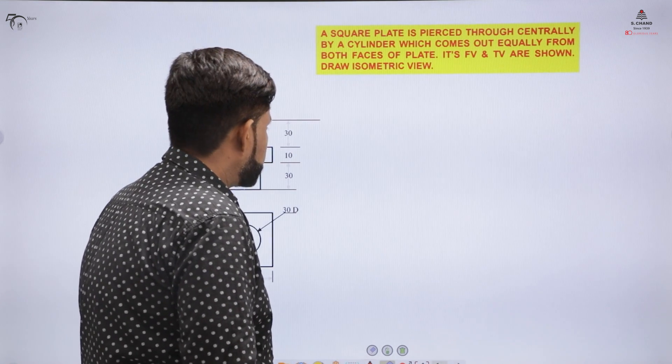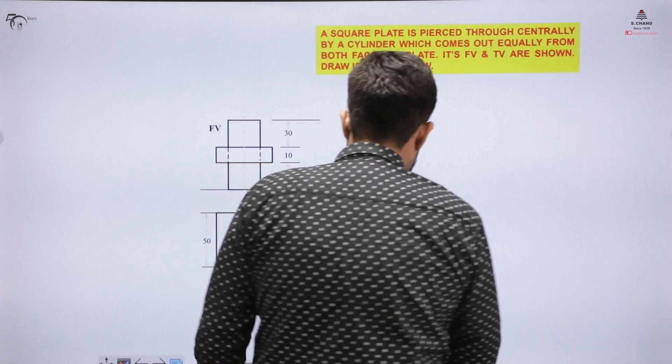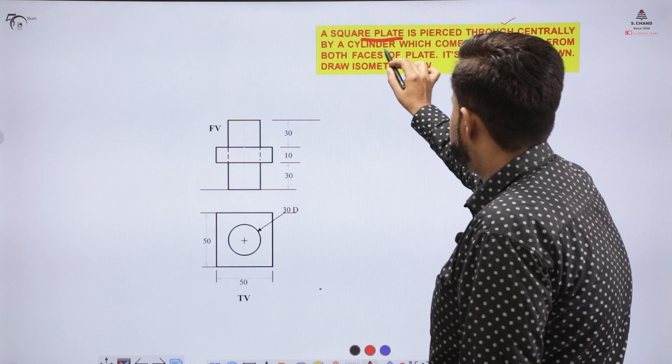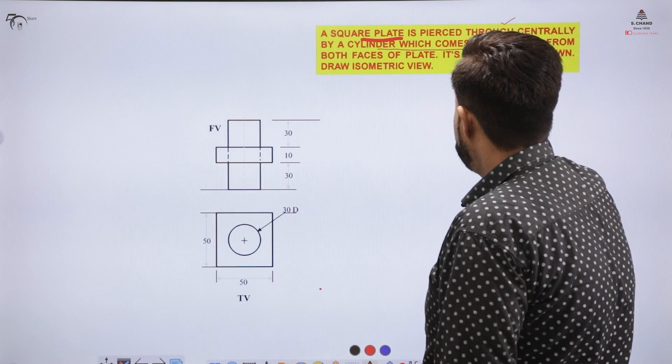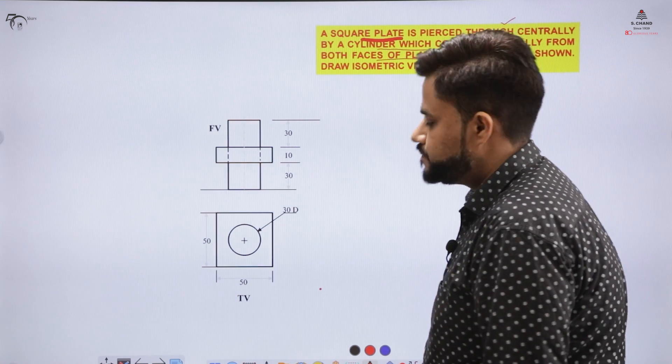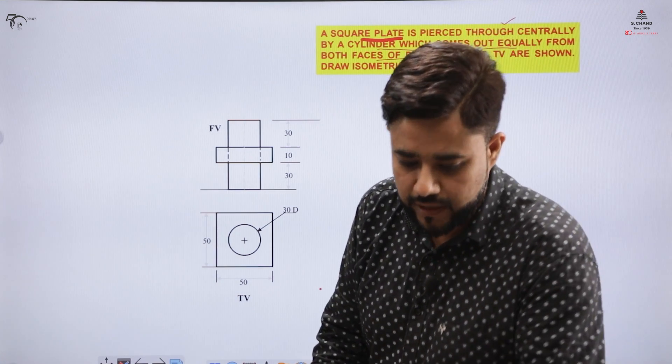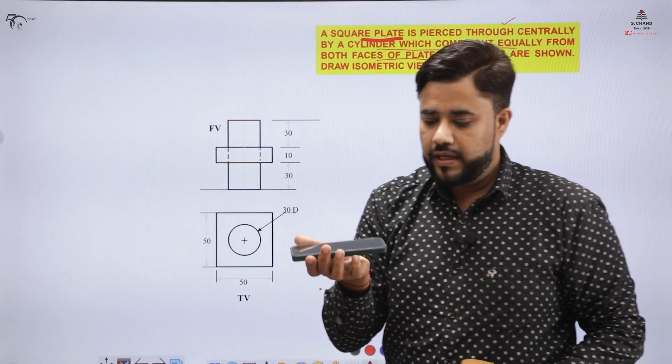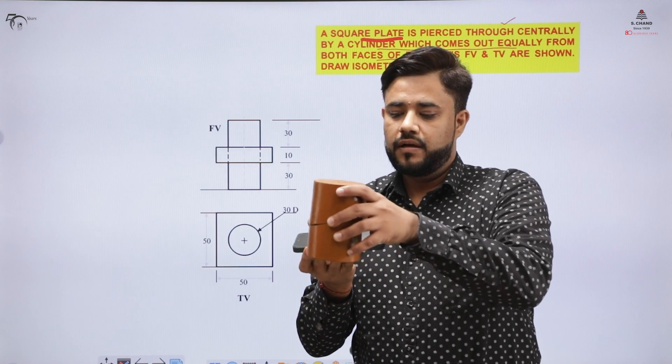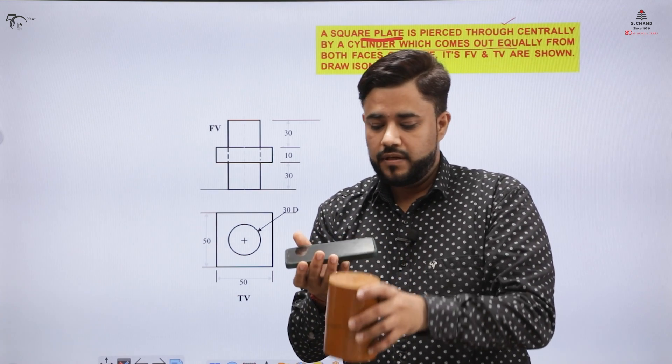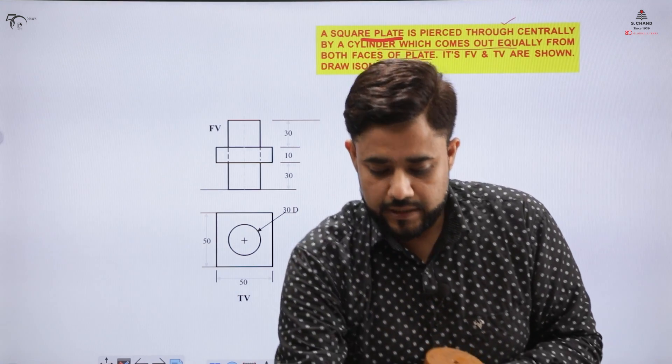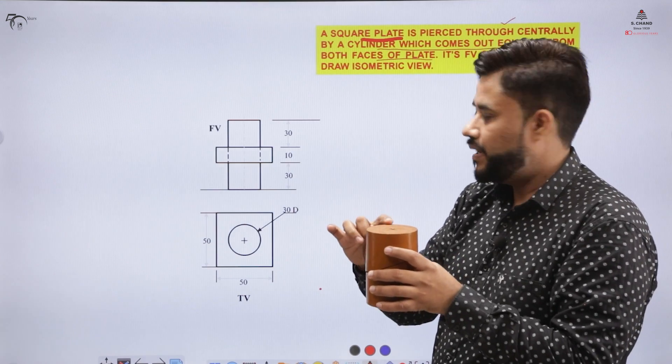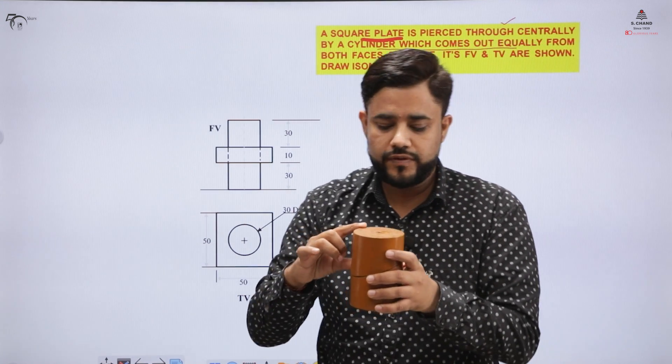The example says that you have a square plate which is pierced through centrally by a cylinder which comes out equally from both the faces of the plate. Let's say I have a plate and in that plate I'll have a cylinder. The cylinder is piercing that plate and coming out from both the parts equally from both the faces.